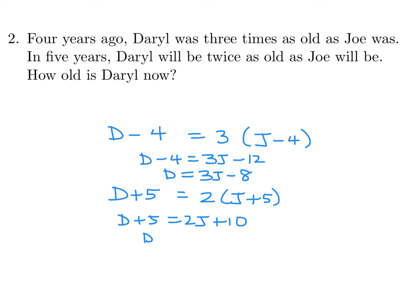Set these two equal to each other. So 3J minus 8 is equal to 2J plus 5, and therefore J is equal to 13. And we can substitute that 13 into any one of these, and that would be 39 minus 8 is 31. So the answer to this question, how old is Daryl now, is 31 years old.